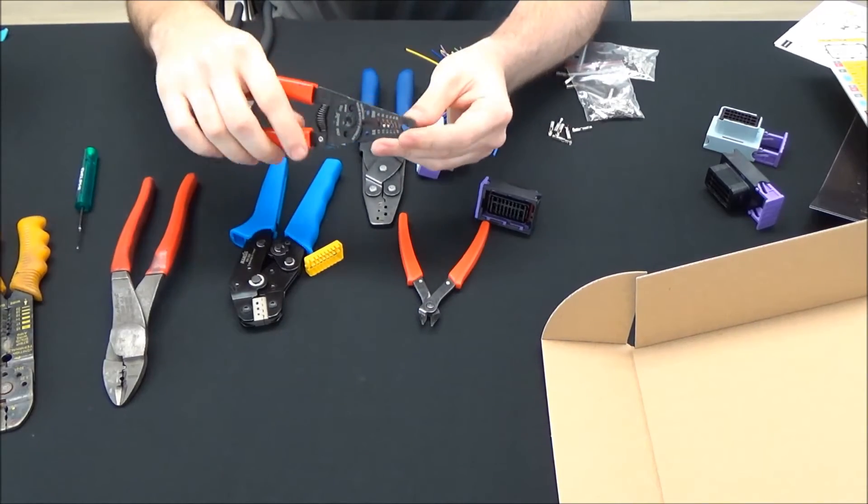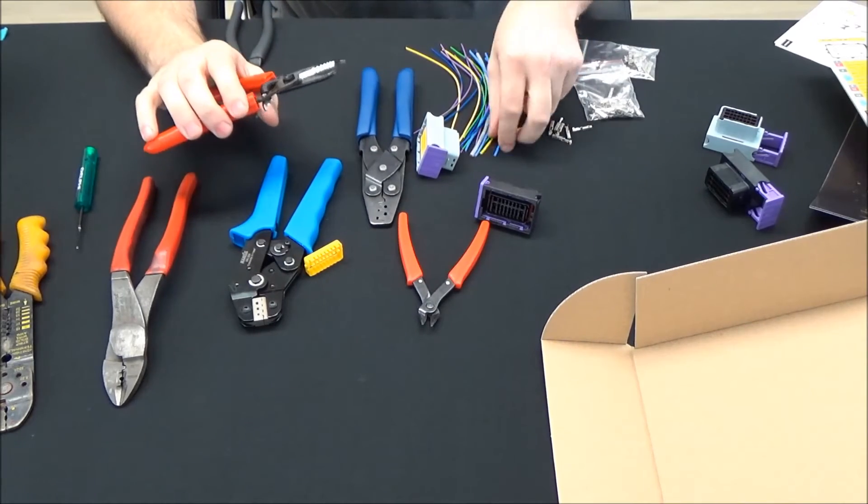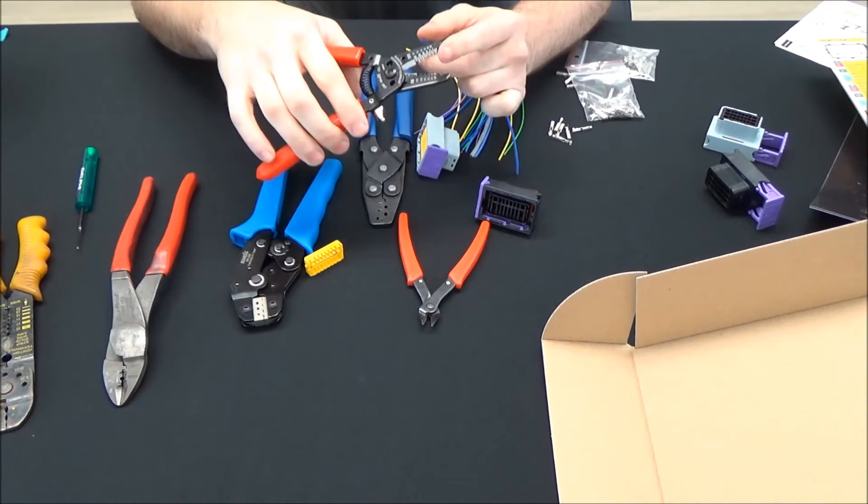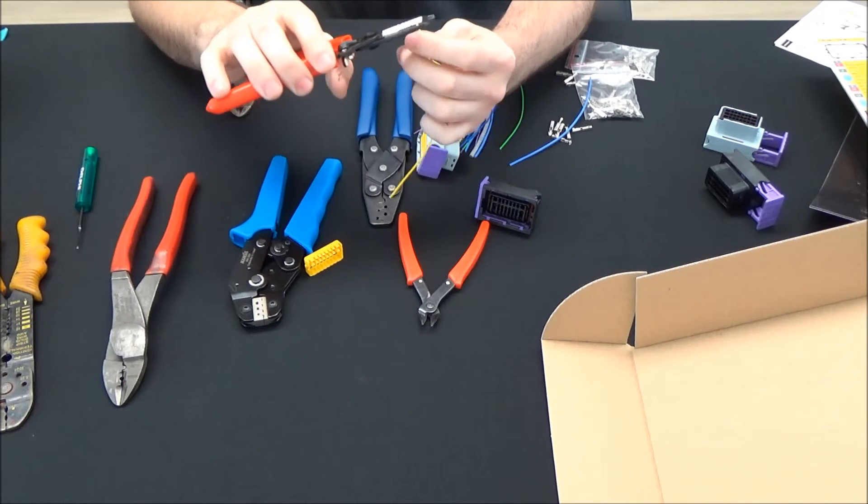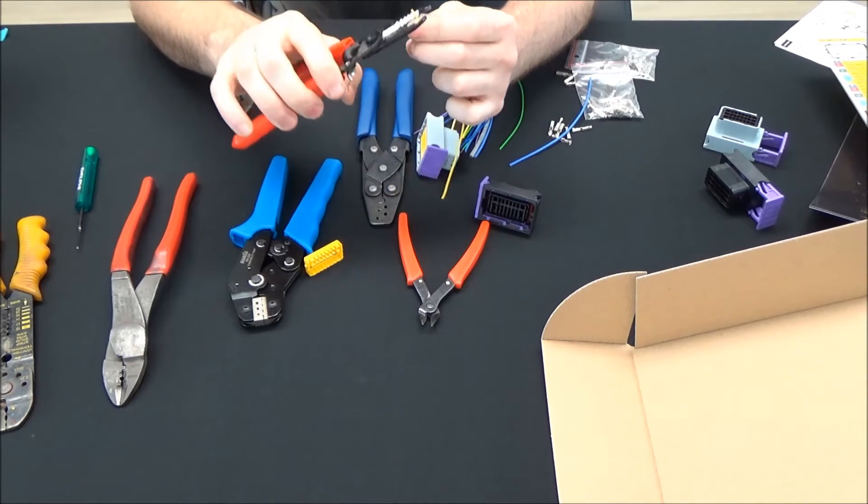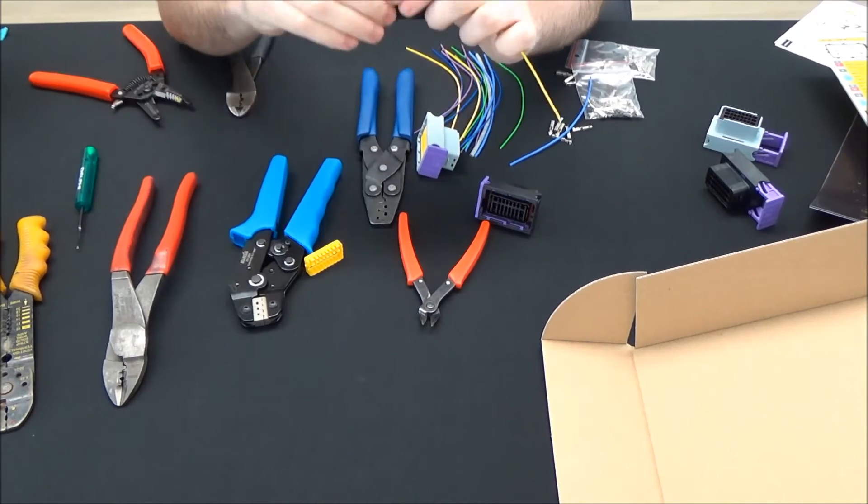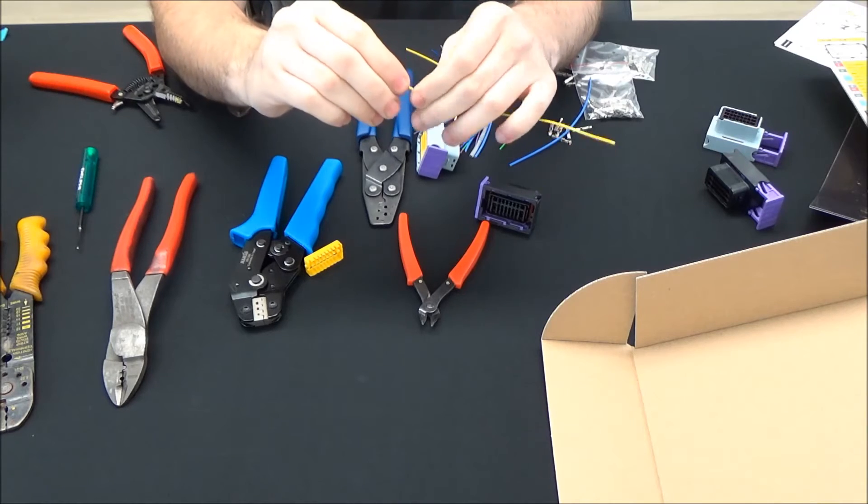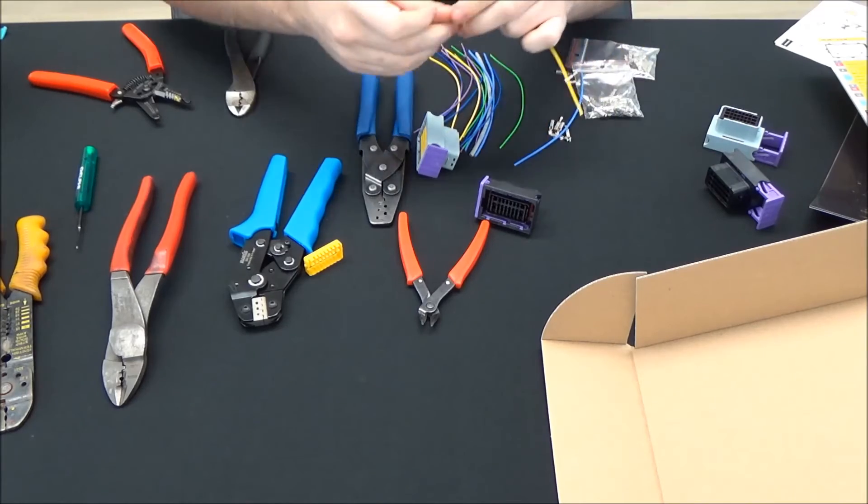And then some very generic wire strippers here that you can find anywhere. You can buy nicer wire strippers. You can buy cheaper ones. It doesn't really matter. Just make sure that if they're not adjustable, if you've got specific jaws here that you pick the right one for the gauge wire we're using. This wire right here is probably a 20 gauge. So I'll strip the end of the wire. You can take a look at it. Make sure you don't cut the actual copper conductor.